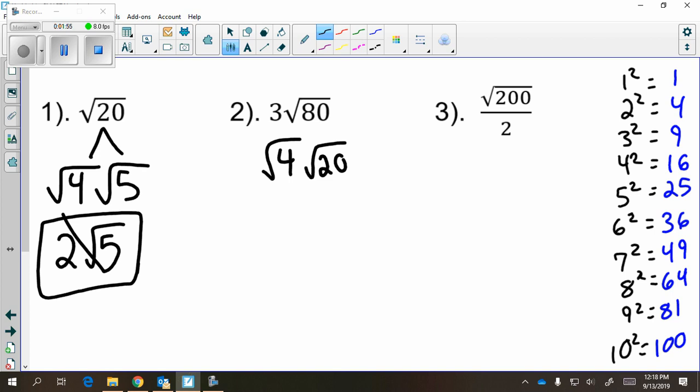If you use this, you're just going to have to simplify radical 20 again. So instead, let's erase this and go back to the drawing board. What's the largest perfect square that goes into 80? That's going to be 16. And then 16 times 5.